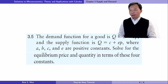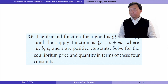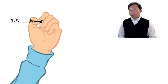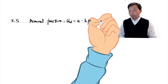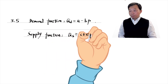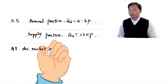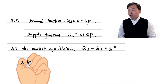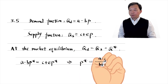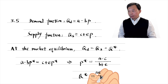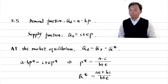Let's solve exercise 3.5. The demand function for a good is Q = A − B × P, and the supply function is Q = C + E × P, where A, B, C, E are positive constants. Solve for the equilibrium price and quantity in terms of these four constants. We write down the demand function and the supply function. At the market equilibrium, the quantity demanded equals the quantity supplied, Q*. We can find the equilibrium price and quantity in terms of the four constants. Notice that A should be greater than C to ensure a positive equilibrium price.